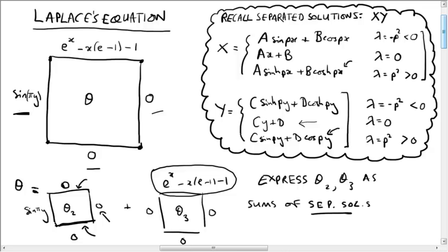This is the third and hopefully final video about Laplace's equation, so if you haven't seen the first two, go and watch them first. We are trying to solve Laplace's equation with some particular boundary conditions on the square. We reduced the problem to solving one where the boundary conditions vanish at the corners by finding a suitable function phi_0, which was a linear combination of lambda equals zero separated solutions. That was the first video.